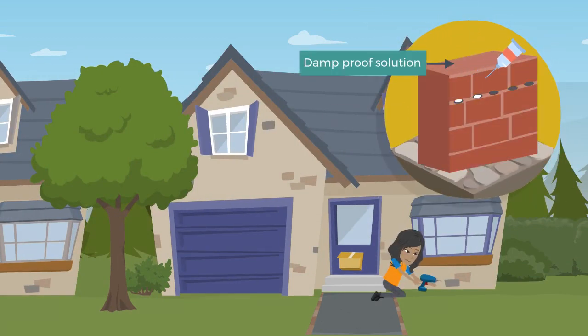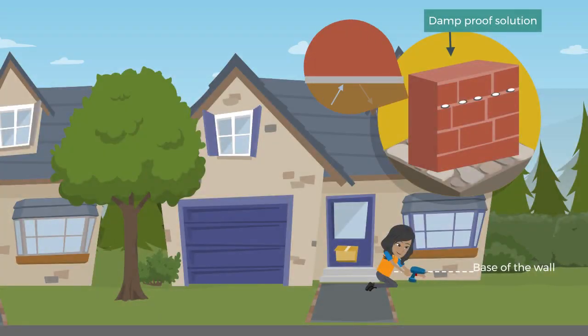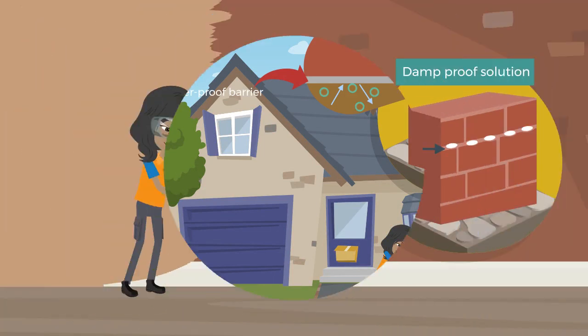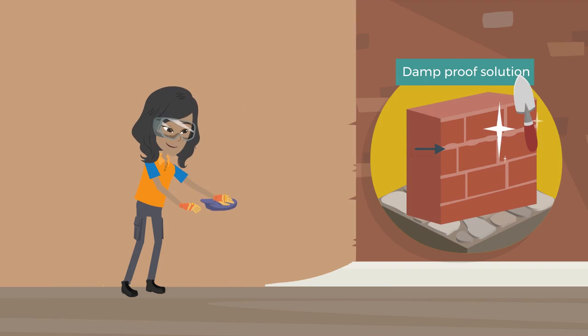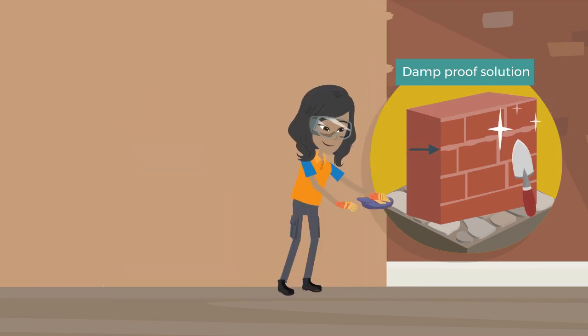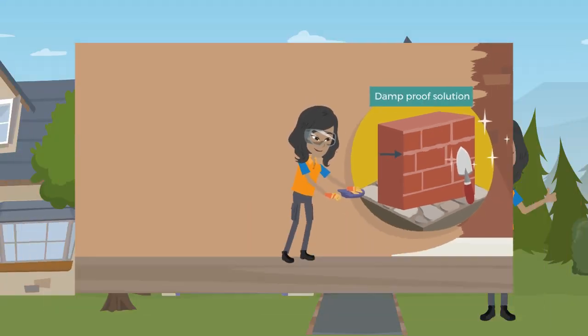When this cures, it creates a waterproof barrier. After application, the drill holes are filled and the wall re-plastered with salt inhibiting plaster to create a fresh and welcoming environment free from rising damp.